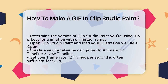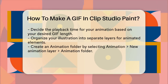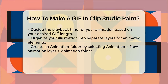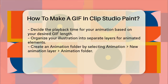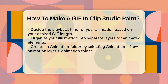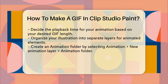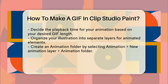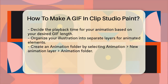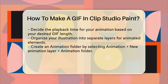Here you can set your frame rate, which can be 12 or 24 frames per second. For GIFs, 12 frames per second is often sufficient, and it's the maximum frame rate when exporting as a GIF. Next, set the playback time for your animation — this determines how long your GIF will be. For example, if you want a four-second GIF at 12 frames per second, you'll need 48 frames. You can adjust the length of your animation by dragging the blue handles in the timeline.